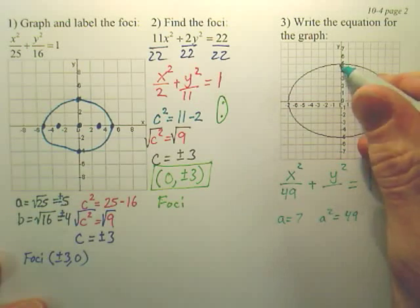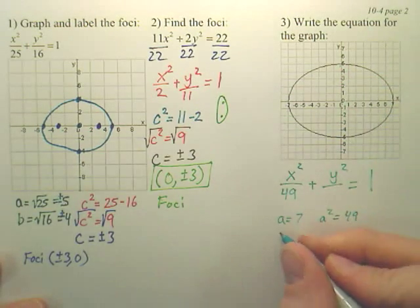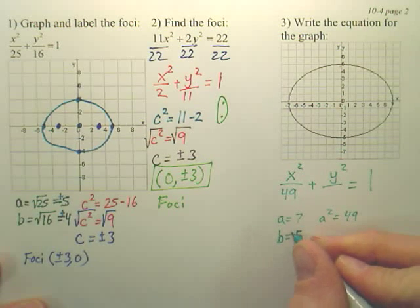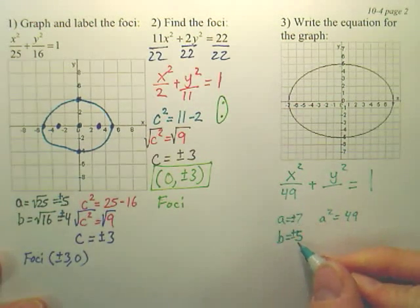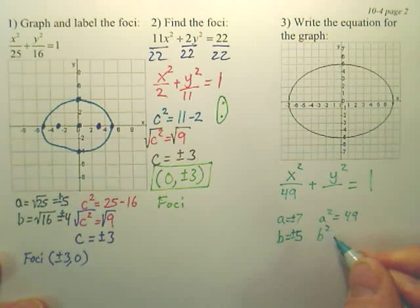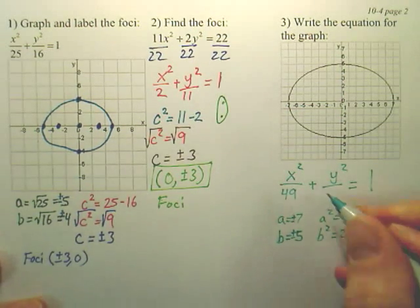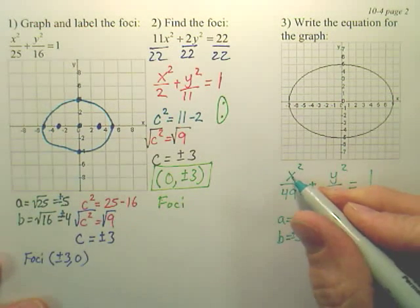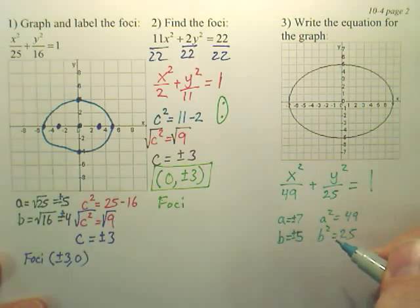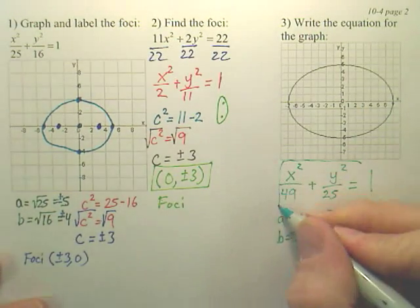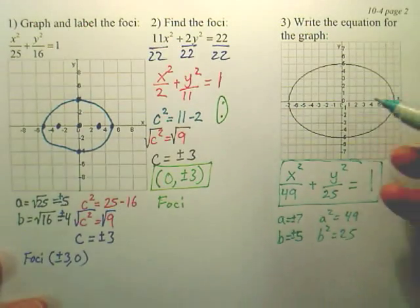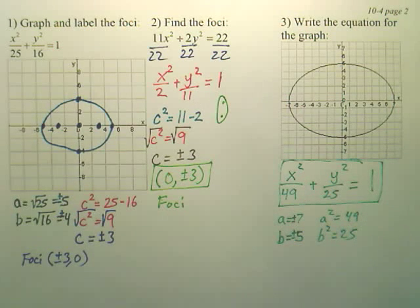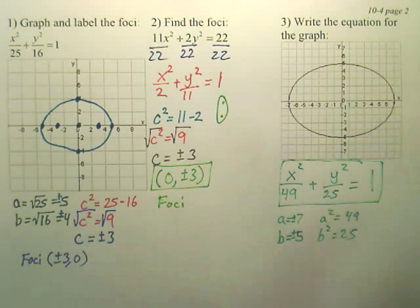So wouldn't that be a 49 right there? And b, doesn't b your shorter value? Looks like we're up and down 5. So if b is 5, actually we probably should put plus or minus, plus or minus 5, well wouldn't b squared be 25? So wouldn't that be 25? So aren't your y values going up and down 5 and your x values going out 7? It's always equal to 1. That's simply your equation. Now if your graph was stretching up and down, your bigger number would be under the y squared, your smaller number would be under the x squared. But this one is going left to right.